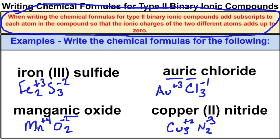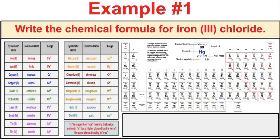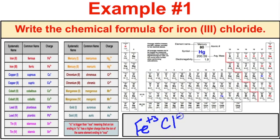Let's work through an example: write the chemical formula for iron(III) chloride. Iron 3 is Fe with a plus 3 charge, and chloride comes from group 17 so it's negative 1. You need three chlorides, giving FeCl₃ as the correct chemical formula for iron(III) chloride.